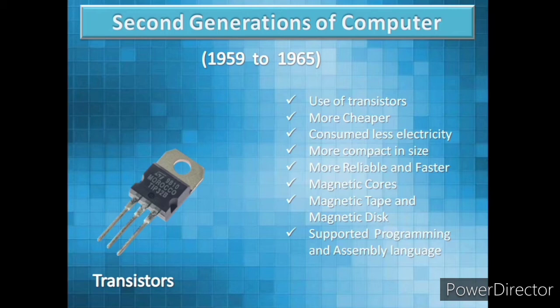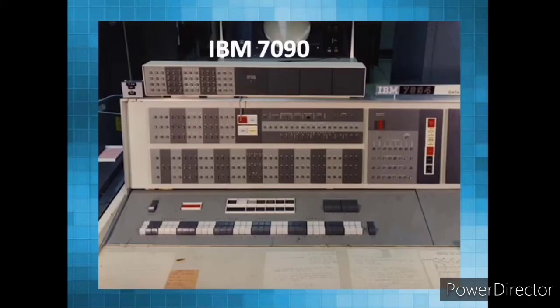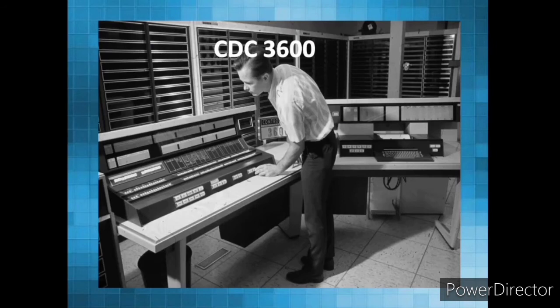This type of computer supported programming language and assembly language. Some examples of this generation of computers were: first, IBM 7094; second, CDC 3600.